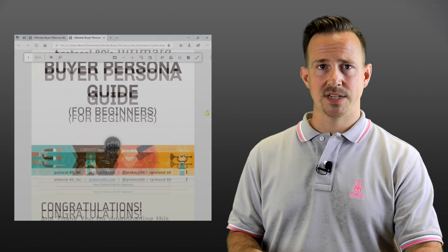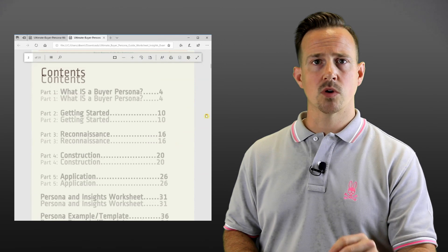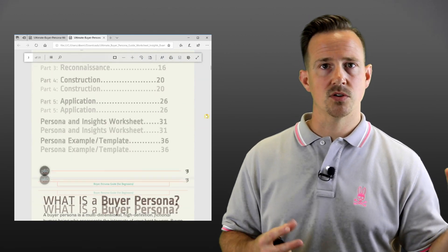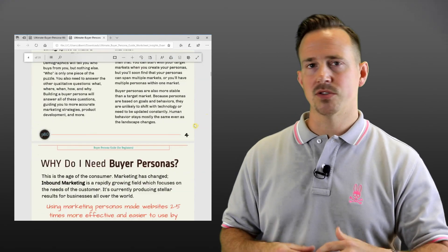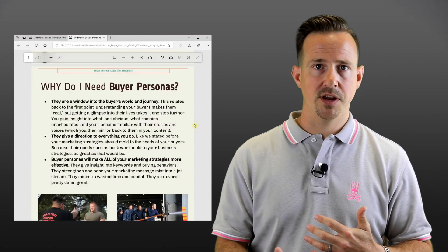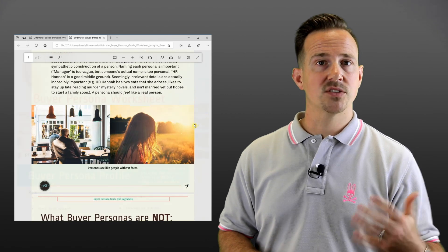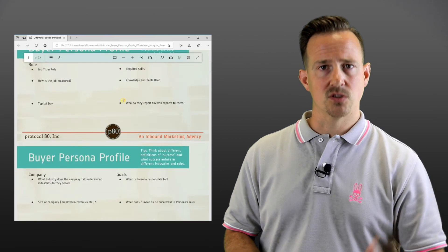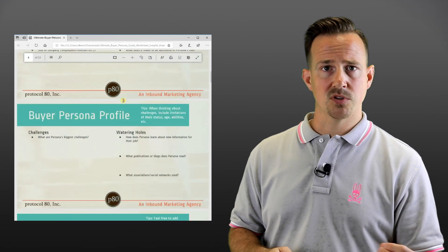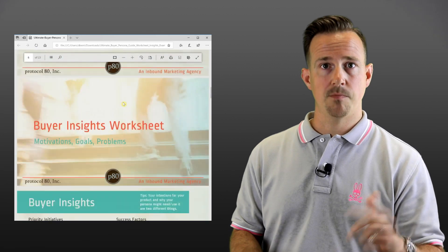Once you've completed this round of research — and remember this is an iterative process, so over time you're going to want to do more interviews, get more secondary research, and put them together to evolve your persona — it's time to put your persona together and start to document the actual profile. I've linked an awesome resource down in the description, a completely free resource, that includes a worksheet for taking this information you've gathered and putting it into an actual buyer persona. It also dives deeper into some of the items I've covered here in terms of research, questions you should ask during your persona interview, and what the whole process looks like. It's called The Ultimate Guide to Buyer Personas for Beginners, so it's linked below in the description — make sure you grab that.